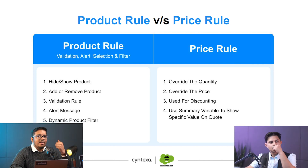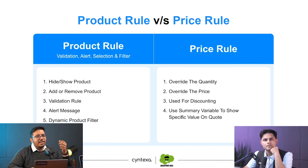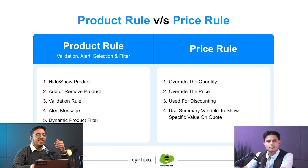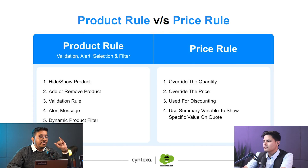We can also use summary variables to show specific values on the quote. For example, if we're selling multiple products — both hardware and software — we can get a sum of how much worth of software and how much worth of hardware we're selling to a particular customer, displayed on the quote itself. This helps the sales representative understand the breakdown. We can do that with price rules.